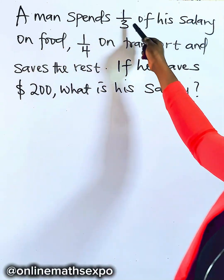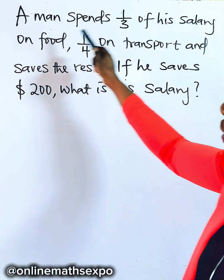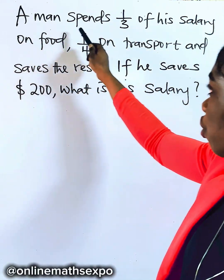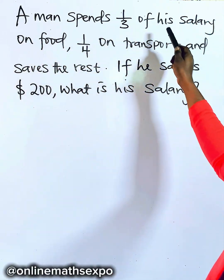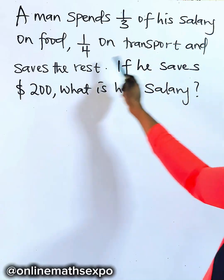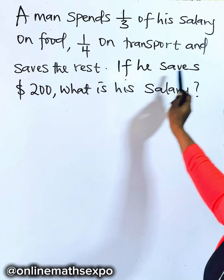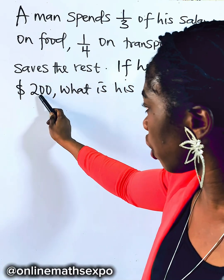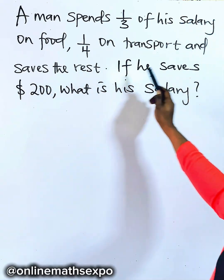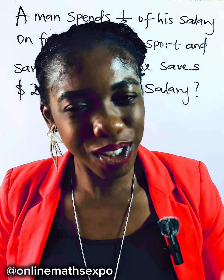A man spends one third of his salary on food, one quarter on transport, and saves the rest. If he saves $200, what is his salary?